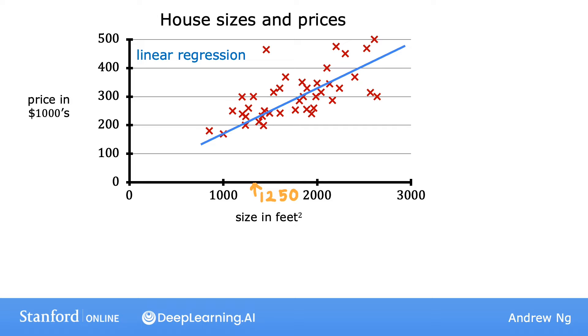And based on this straight line fit to the data, you can see that if a house is 1,250 square feet, it will intersect the best fit line over here. And if you trace that to the vertical axis on the left, you can see the price is maybe around here, say about $220,000.